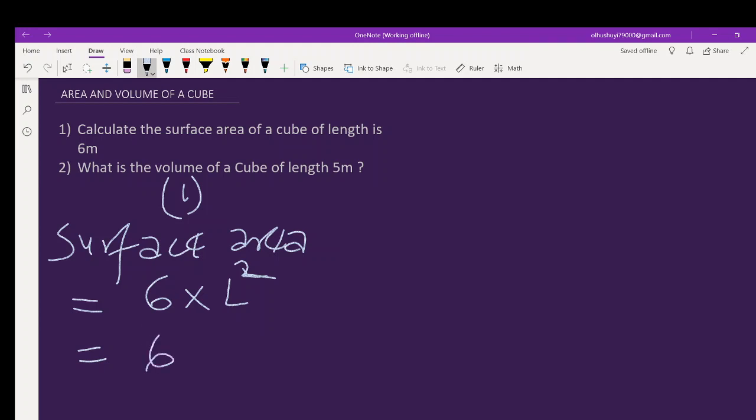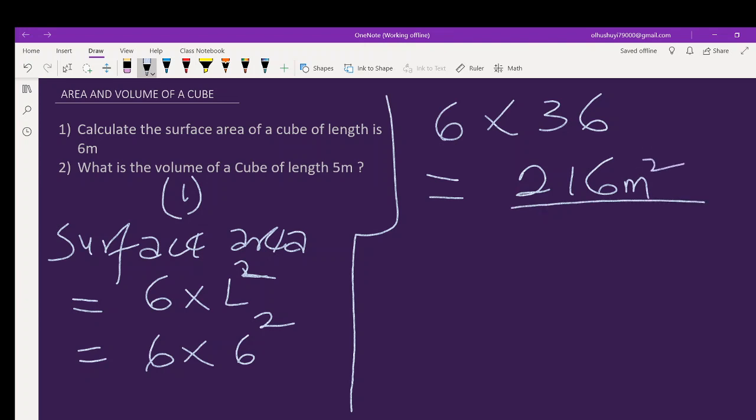Six times the length is six squared. We have six times 36. Six times 36, so you have it to be 216 meters squared.